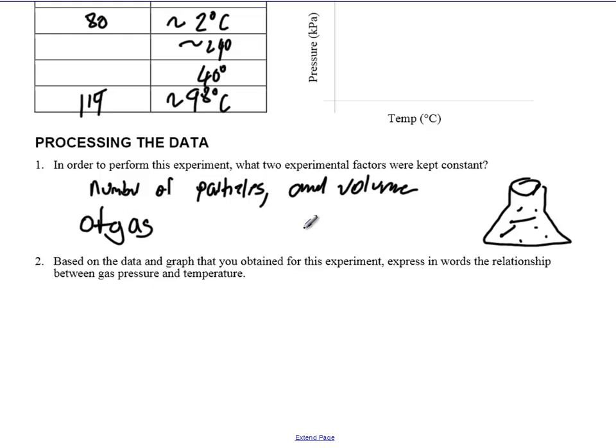Based on the data and graph that you obtained for this experiment, express in words the relationship between pressure and temperature. I can't say for sure what your data looks like, but it should look something like this. As temperature goes from around 0 to around 100 degrees, this is going to go from around 80 to about 120, somewhere in there. And you're going to have a line that looks about like that. And hopefully these points are fairly linear. And what that shows is pressure increases with temperature. Now that shouldn't be surprising.